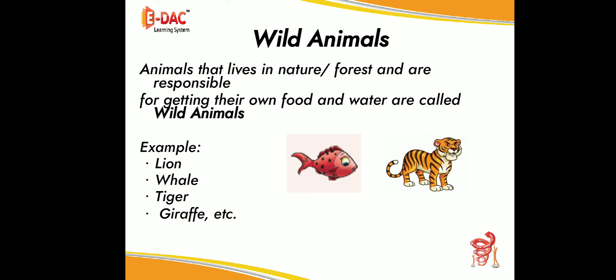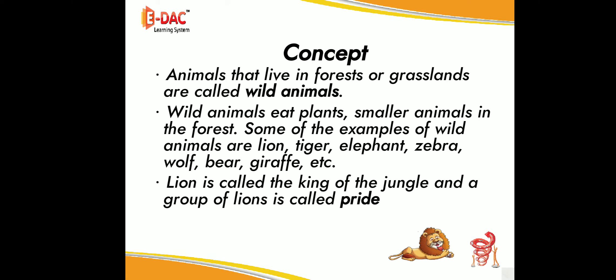For example: lion, whale, tiger, giraffe, etc. Animals that live in forests or grasslands are called wild animals. Wild animals eat plants and smaller animals in the forest. Some examples of wild animals are lion, tiger, elephant, zebra, wolf, bear, giraffe, etc. Lion is called the king of the jungle, and a group of lions is called a pride.